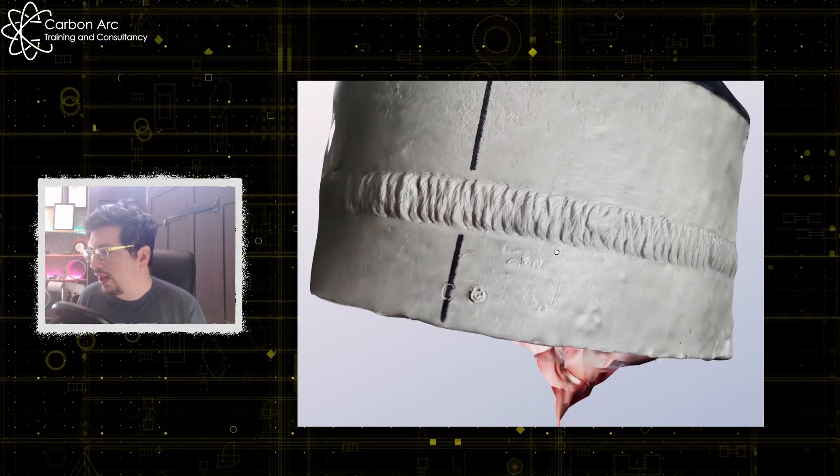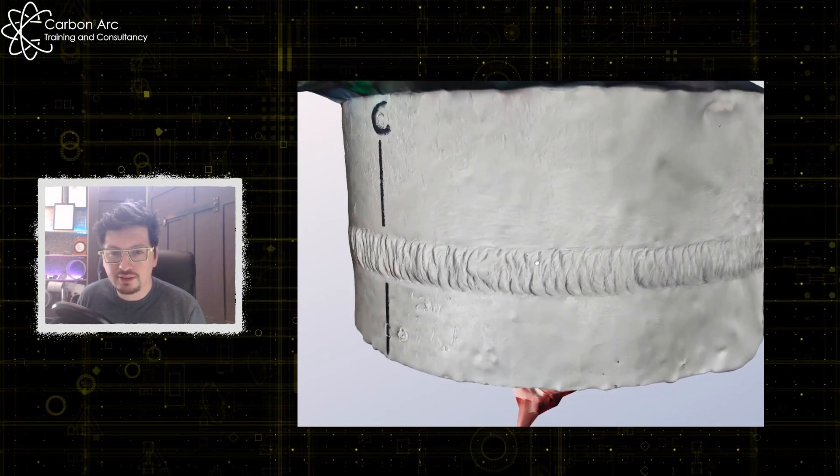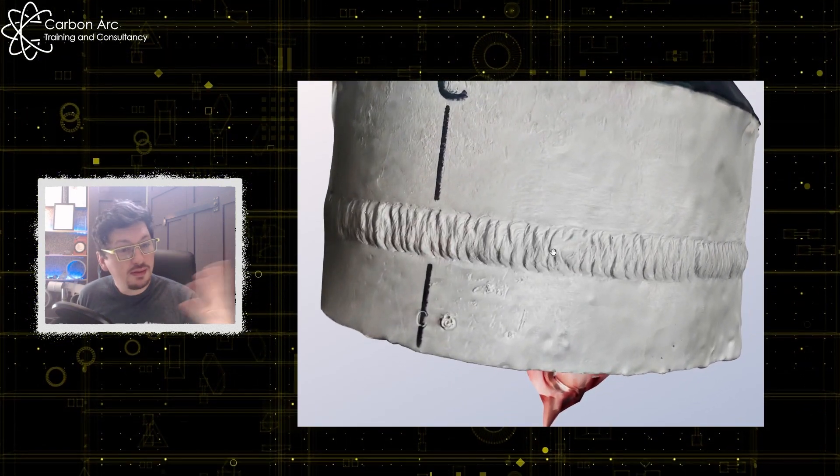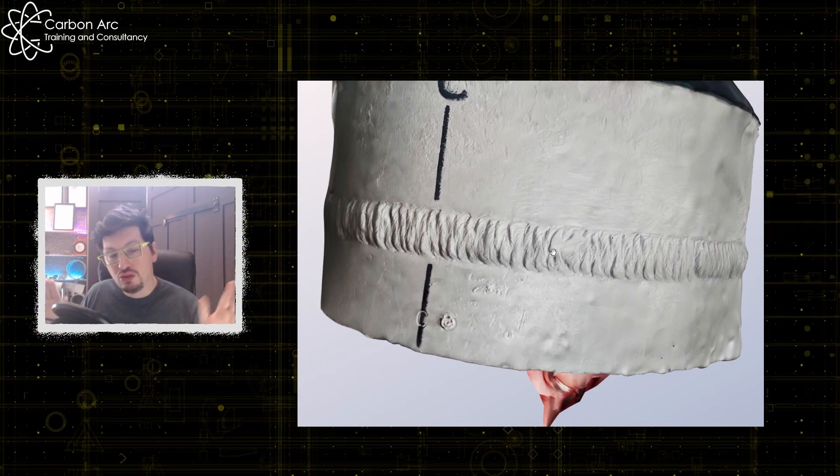If we can do that, we can identify all of the arc strikes on our samples if there are any more. And we'll be able to accept and reject them because C-SWIP will say no arc strikes allowed.